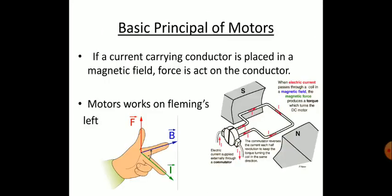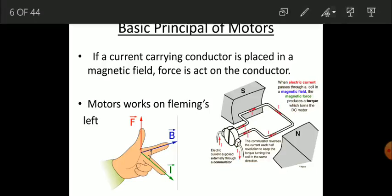The basic principle of a motor is exactly reverse to that of the generator. In the case of a motor, when a current-carrying coil is kept in a magnetic field — in a generator the coil was not carrying current, the current was generated, but in a motor the coil already carries current — the red arrow shows the direction of the current. According to that, the direction of force on the conductor will be defined, and it may be upward or downward, which we find using Fleming's left-hand rule.